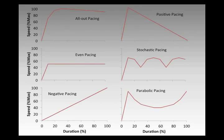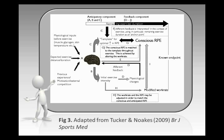Then negative pacing, where you start slow and gradually increase. A very common pacing strategy that we see is a sort of combination of negative and positive, where you have a bit of a fast start, settle down in the middle, and then a kick at the end.